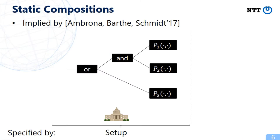The first one is static compositions. In an ABE scheme for statically composed predicates, the composition policy is already fixed in the setup phase. In the case of this slide, the composed policy is P1 and P2 or P3.